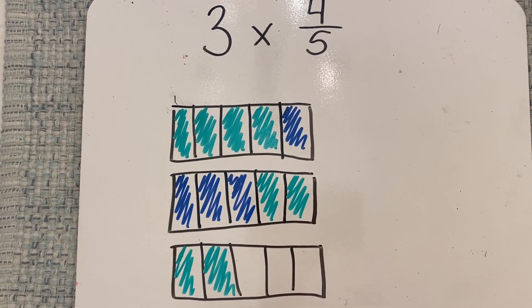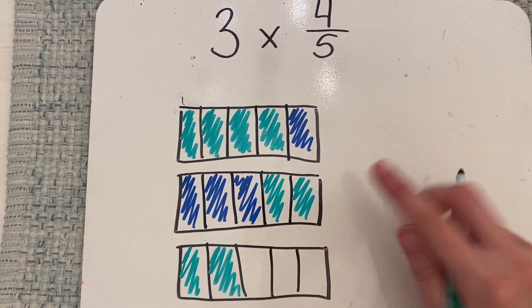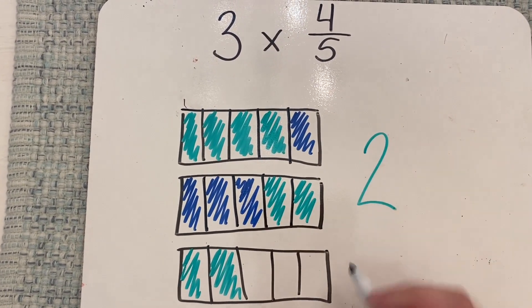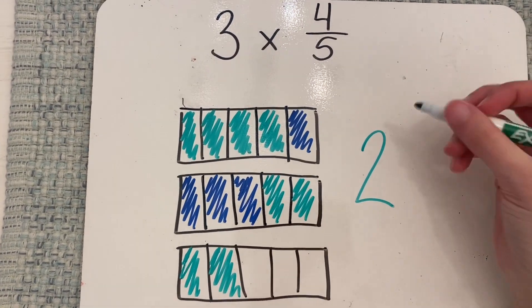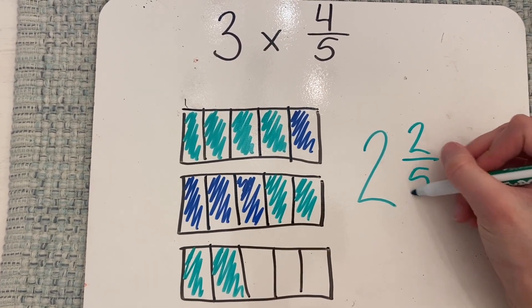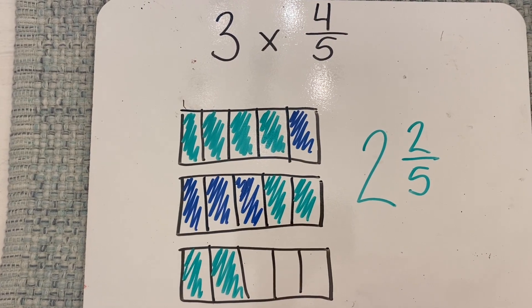So how many whole boxes do I have shaded in? I have these two. And then how many extra fifths do I have? I have two-fifths. So my answer is two and two-fifths.